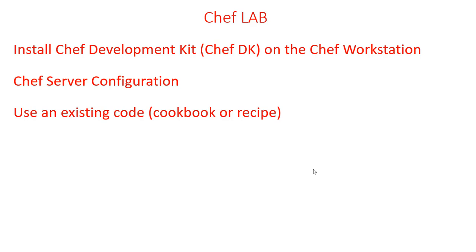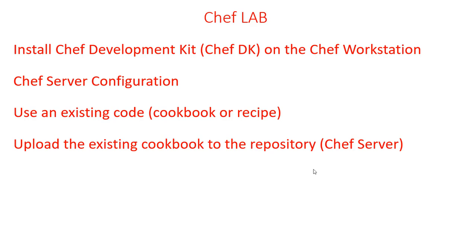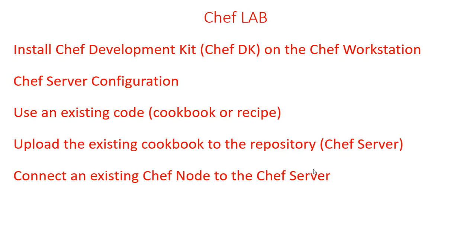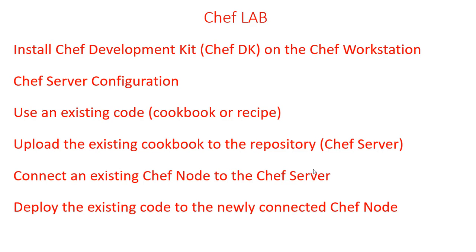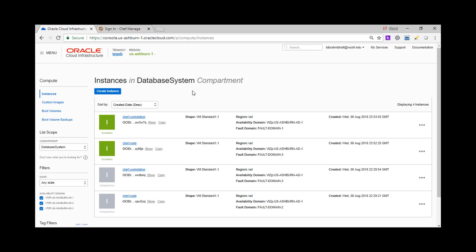We will use an existing cookbook — a recipe — downloaded from a marketplace where people have created different cookbooks. We'll make minor configuration changes and use it. Once the cookbook is modified, we'll upload it to the central Chef Server repository. We'll also create an existing node, see how everything connects, and finally apply that configuration to the node through Chef.